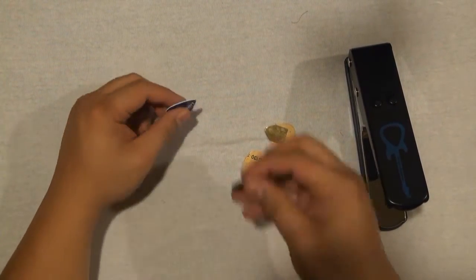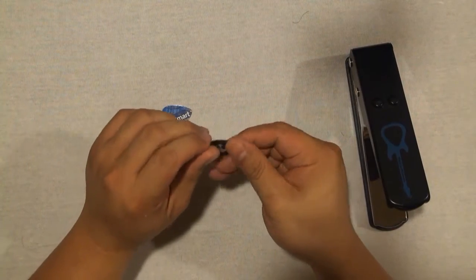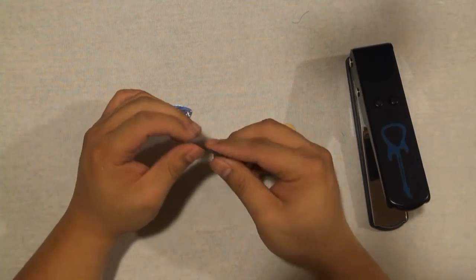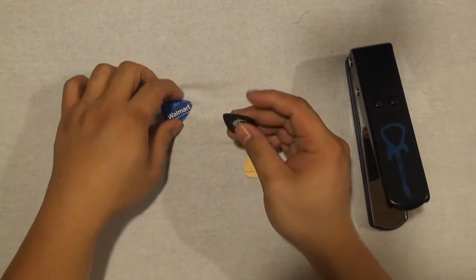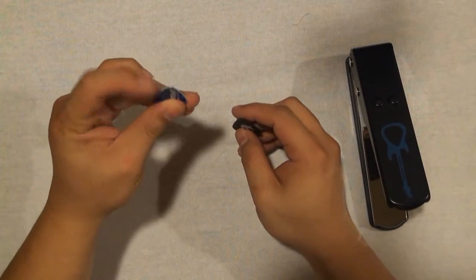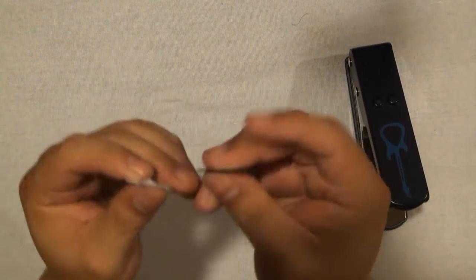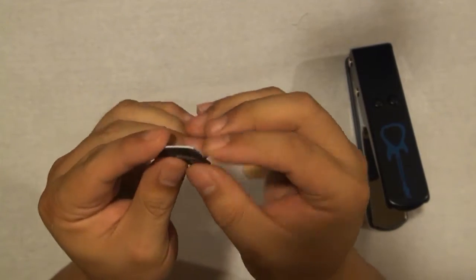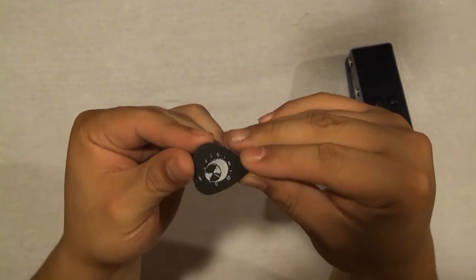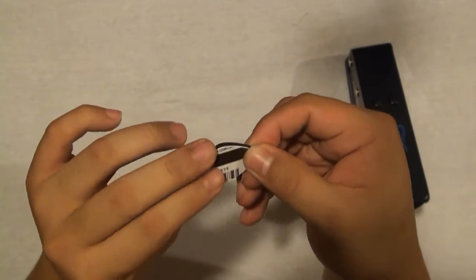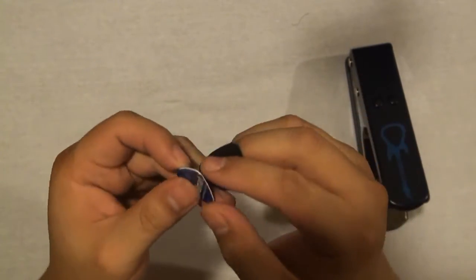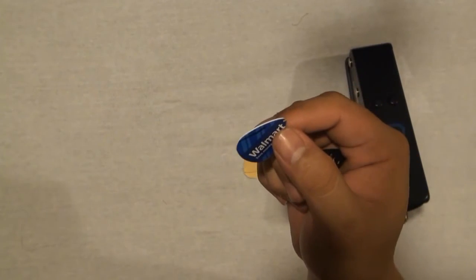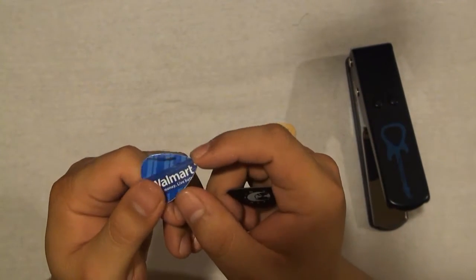So this is a regular pick that I have. I forgot the size of it. But this is a pick, a guitar pick. And this is the Walmart pick that I made. But it still depends on the material that you're going to use. But basically they have the same size. I mean the thickness will be all up to you. Like this one is thin. I like it thin. And this is like thick. I mean you can use this for electric guitars and stuff like that. Or if you want thick picks.